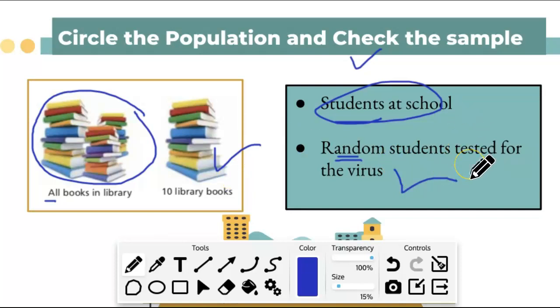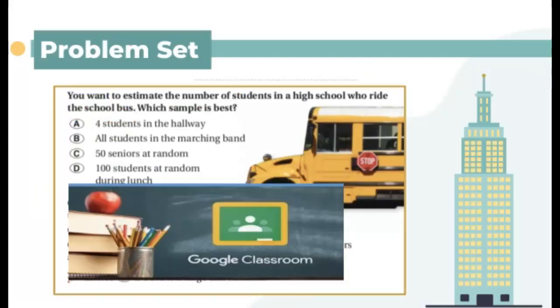All right, so now you know which one is the sample and which one's going to be the population. All right, let's check on this problem set. You want to estimate the number of students in high school who ride a school bus. Which is the best sample for this? Which sample is the best? Let's look at letter A: four students in the hallway.